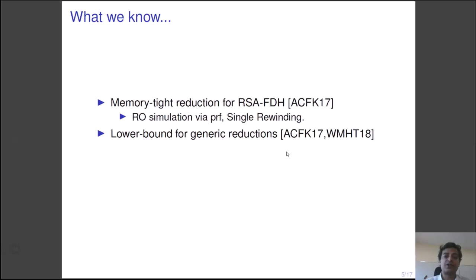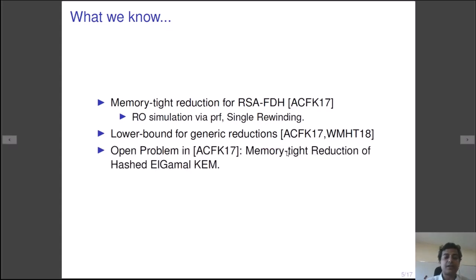The natural question that arises is whether a memory tight reduction exists. In the same paper, the authors showed that a memory tight reduction for existential unforgeability of RSA full domain hash exists. Their technique formalized the notion of simulating the random oracle by a pseudo-random function where the key of the pseudo-random function is sampled and is saved by the reduction. In addition, the reduction rewinds the adversary once. Apart from this, all the known results about memory tight reductions are either lower bound or impossibility results. The starting point of this work is the open problem raised by ACFK, namely finding memory tight reduction for the IND-CCA security of hashed ElGamal KEM.